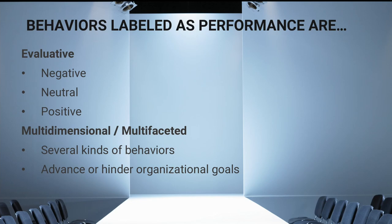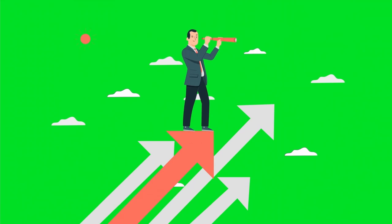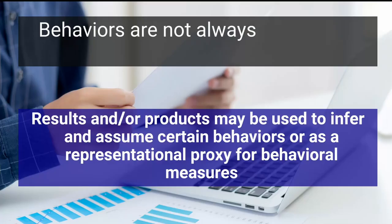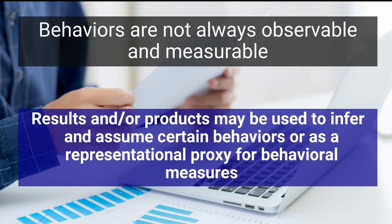The value of these behaviors and results can fluctuate and vary depending on the extent to which they contribute towards the accomplishment of individual goals, team goals, unit goals, and overall organizational goals. Second, performance is considered to be multi-dimensional, meaning there are many different types of behaviors and results that can advance or hinder the achievement of organizational goals. Behaviors are not always observable and measurable, and results may be used as a proxy for behavioral measures.